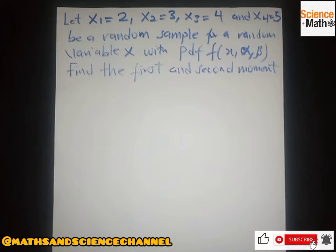Hello everyone, welcome once again to my channel. In this section we have a question on method of moments. The question says let X1=2, X2=3, X3=4, and X4=5 be a random sample for a random variable X with PDF given by that particular function. The question is saying we should find the first and second moment.